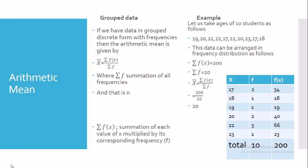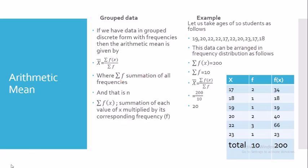To clarify: summation of f is the sum of all frequencies, n is the number of observations, and summation of f*x is the sum of each value of x multiplied by its corresponding frequency f.